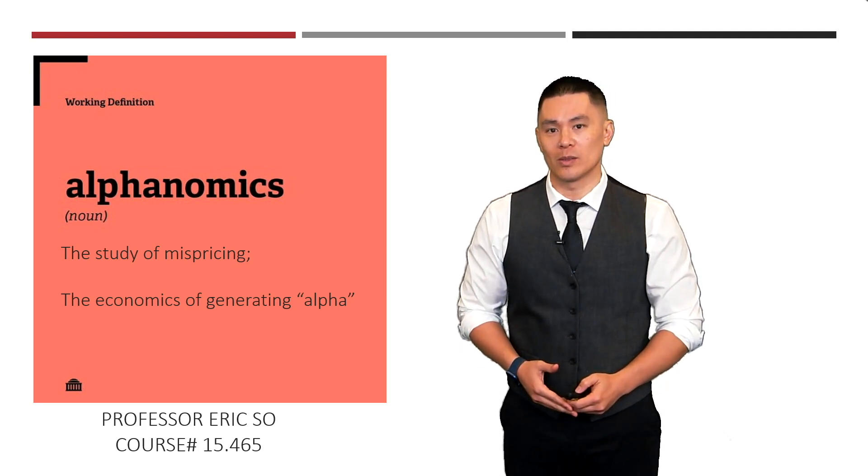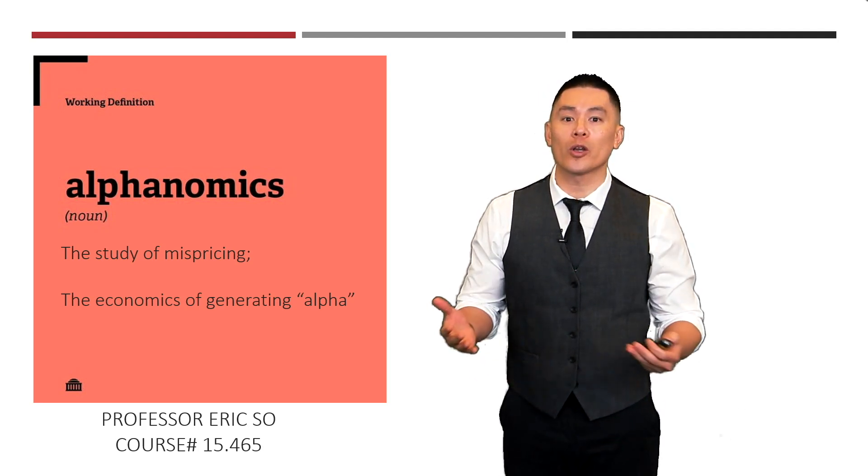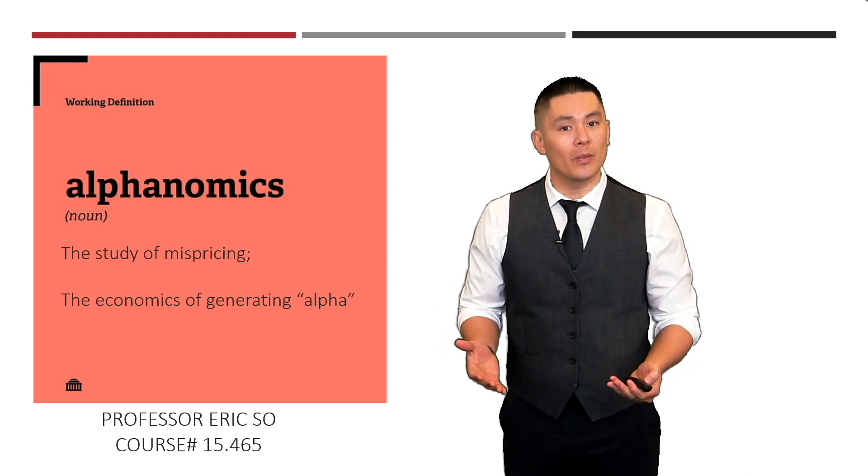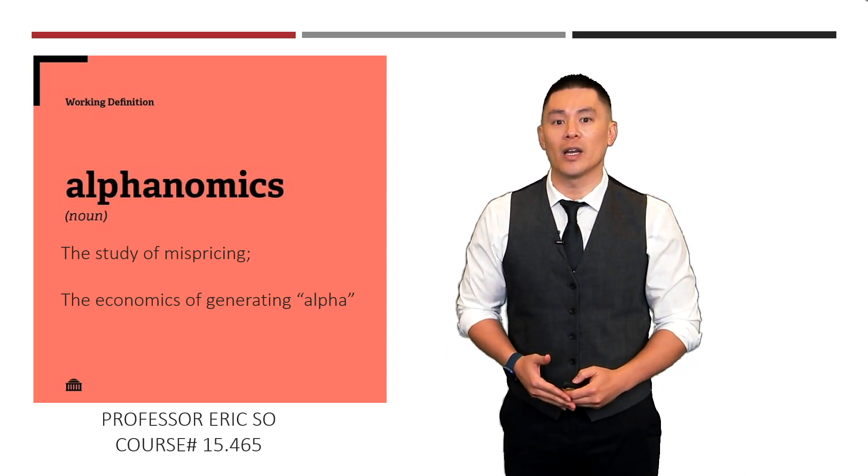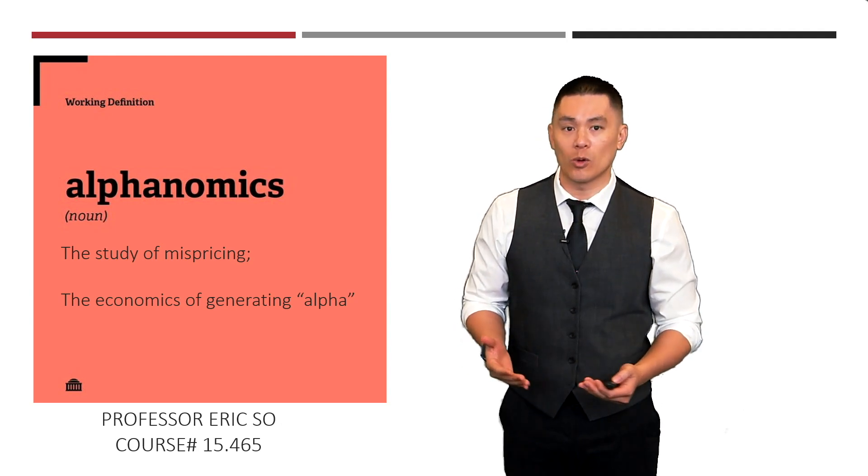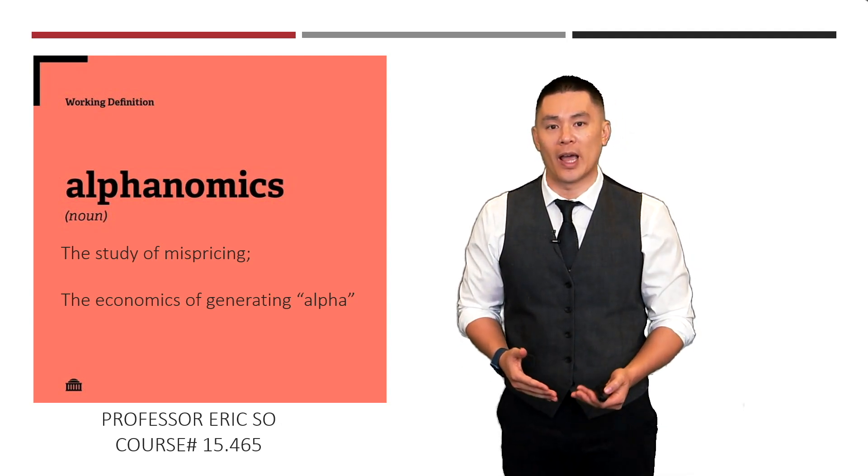In simplest terms, Alphanomics is the study of market mispricing. Alternatively, Alphanomics can be thought of as studying the economics of generating alpha, which refers to the financial rewards from active investing.